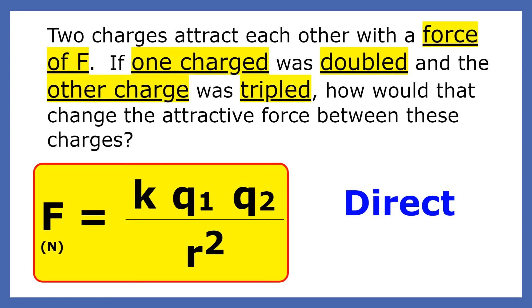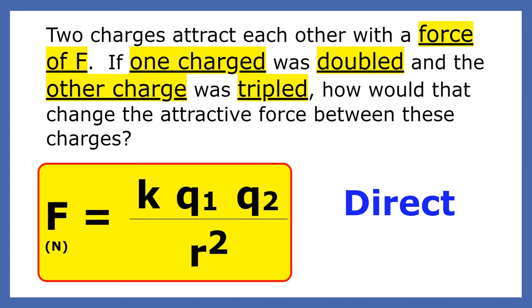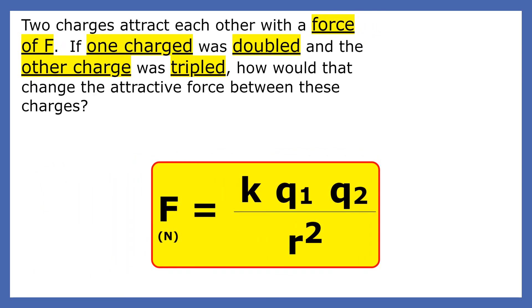Two charges attract each other with a force of F. One charge is doubled, the other charge is tripled. How would that change the attractive force between the charges? Let's plug in the changes: double times tripled, both in the numerator. Two times three is six. The right side increases by six, so the left side increases by six as well.